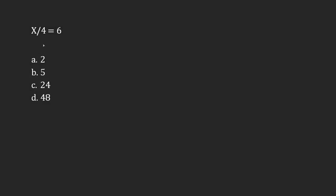x divided by 4, or x over 4, is equal to 6. Now I need to isolate x. Currently x is being divided by 4, so if I multiply x by 4 and do the same thing to the other side — 6 times 4 — then I'm going to be able to cancel these out.